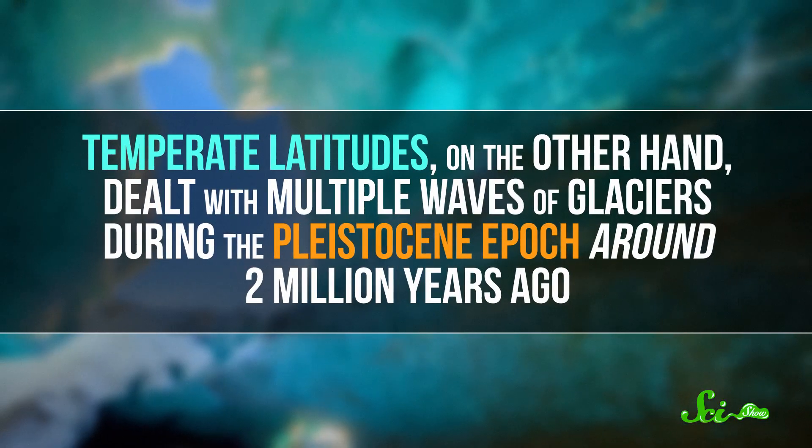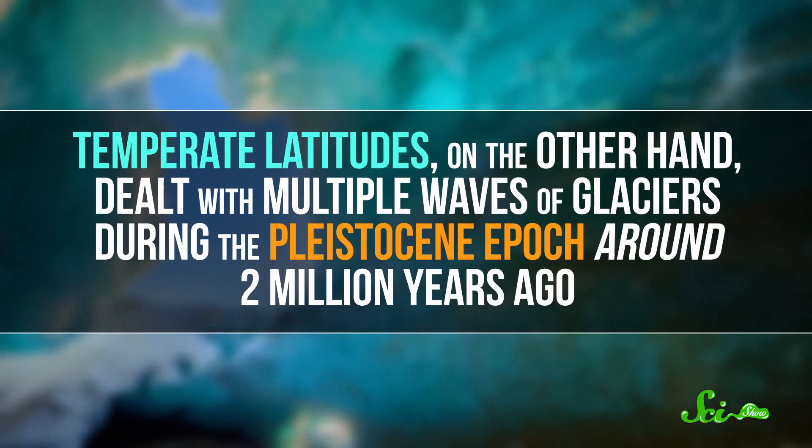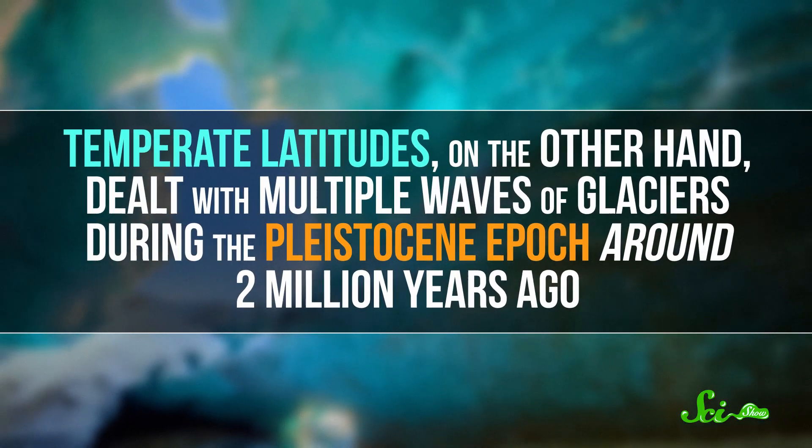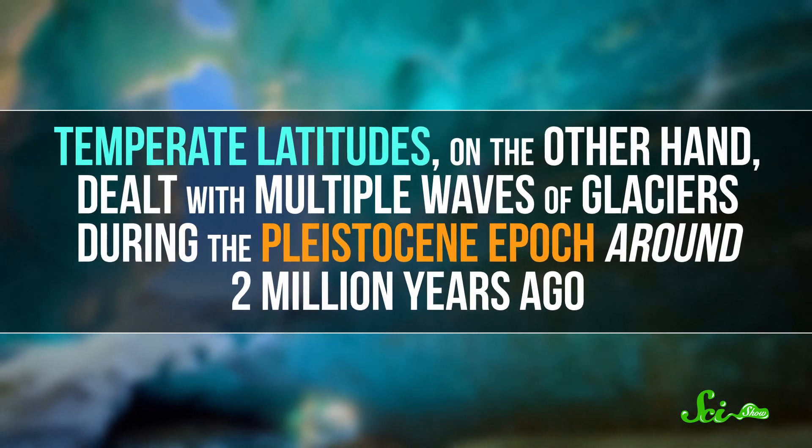Temperate latitudes, on the other hand, dealt with multiple waves of glaciers during the Pleistocene epoch around two million years ago, which made survival hard and limited life's ability to get a foothold. In fact, a lot of modern-day temperate species are actually descended from tropical species, which colonized temperate areas as glaciers retreated. The time and area hypothesis gets some support from the fact that there does seem to be a trend of bigger and older ecosystems around the world having more diversity.